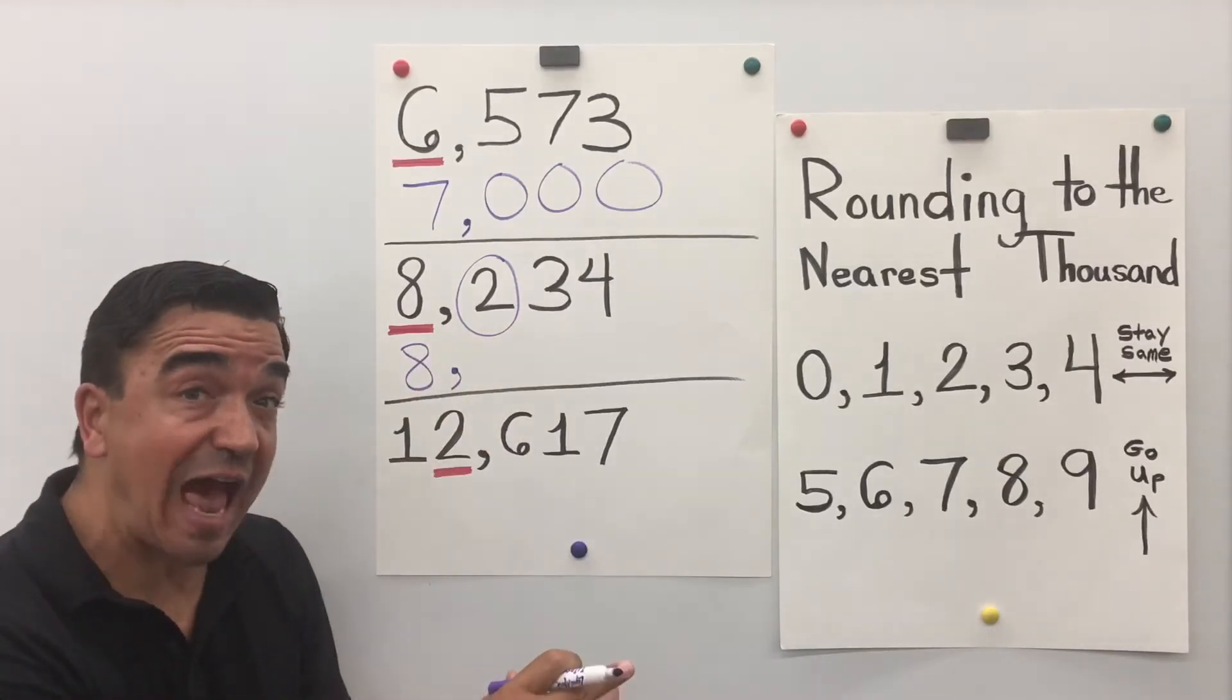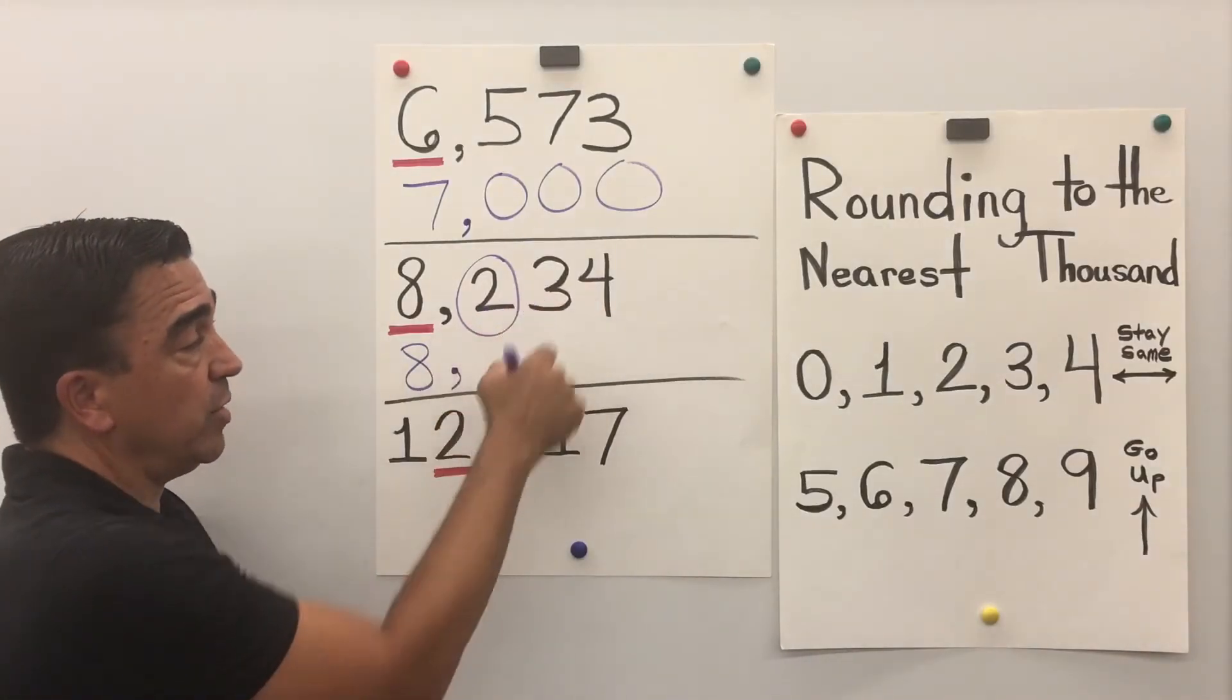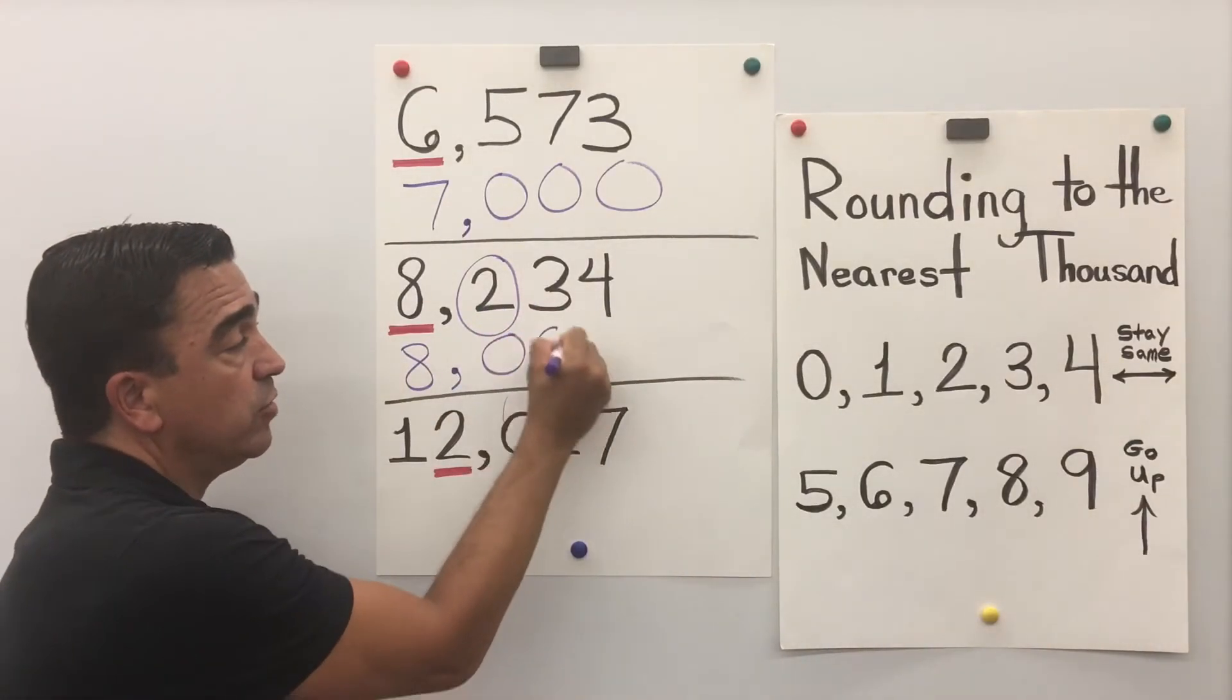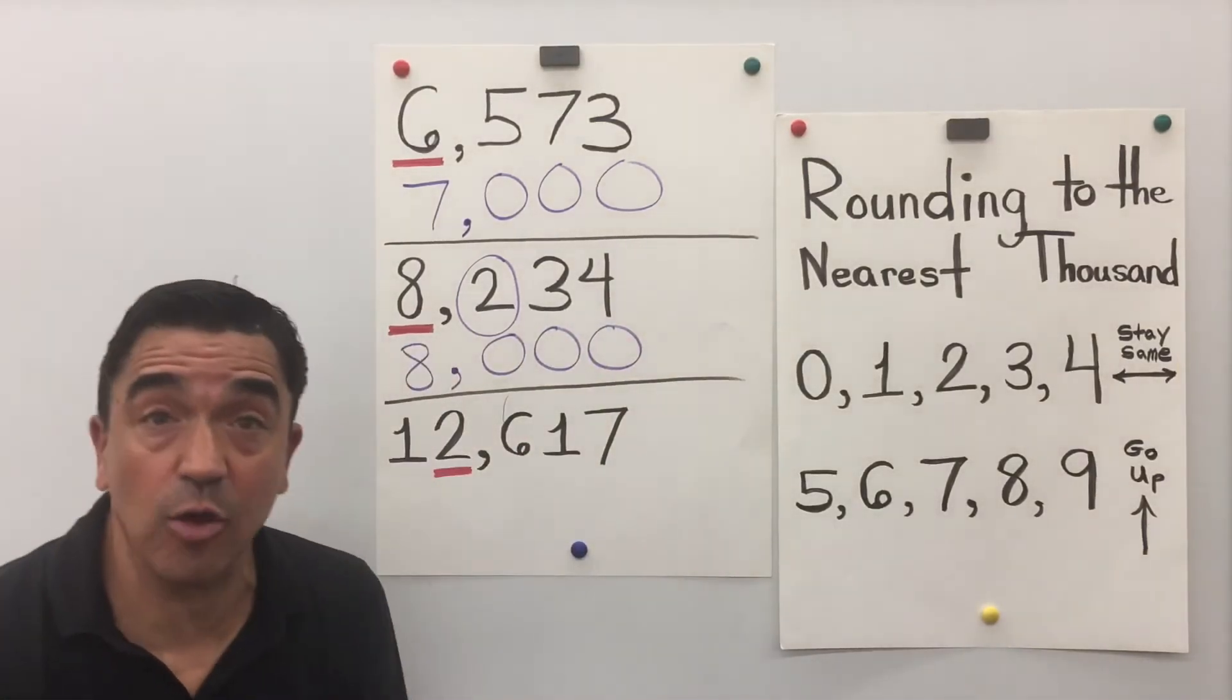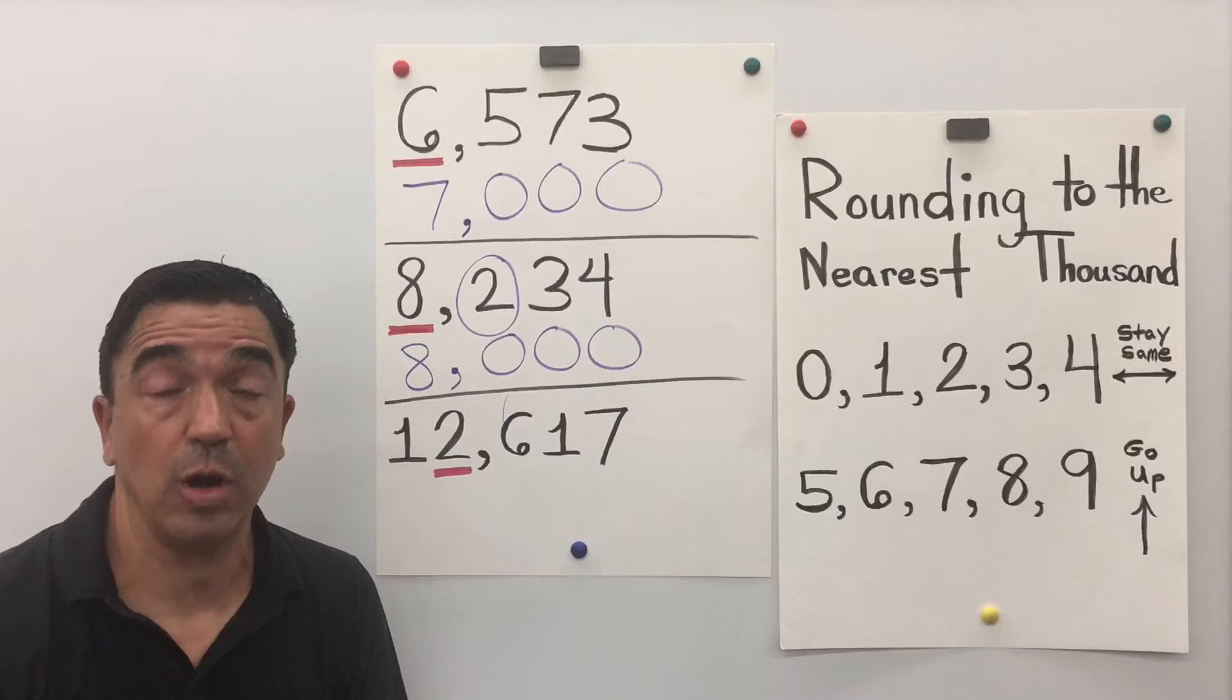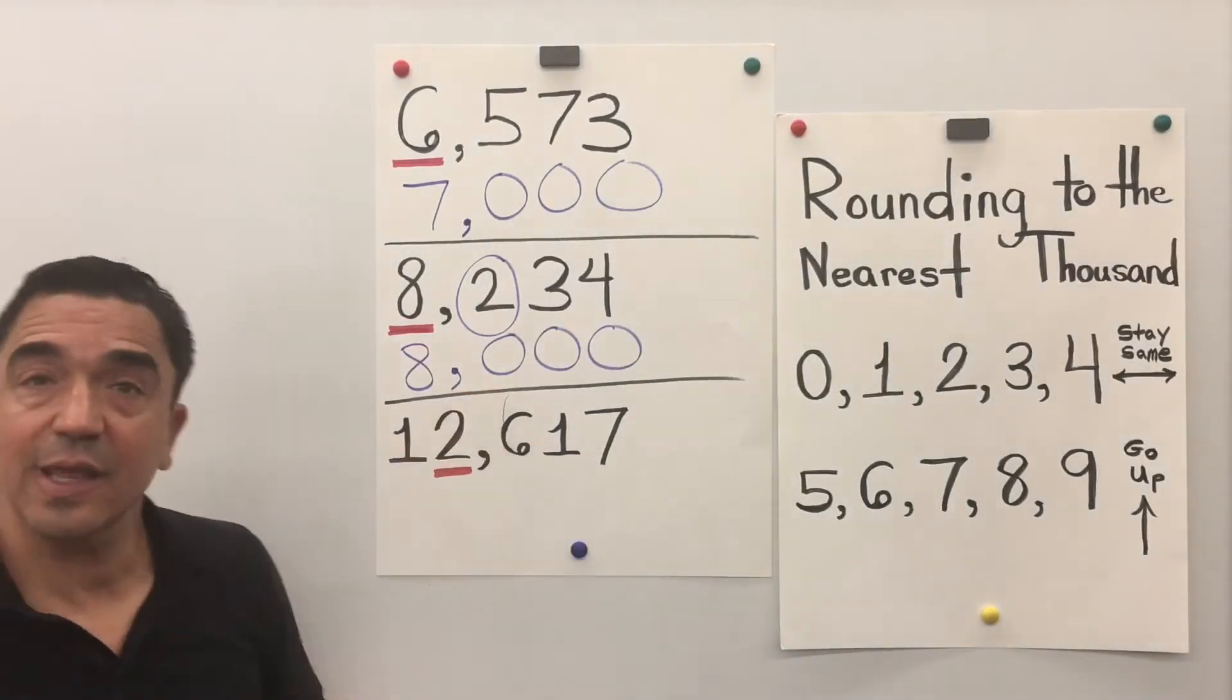And all the digits after are going to become 0. So, 1, 2, 3. So, 8,234 rounded to the nearest thousand is 8,000.